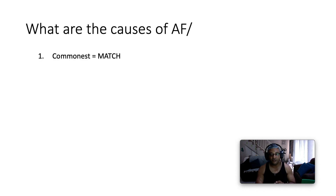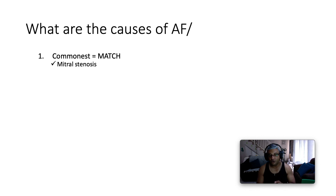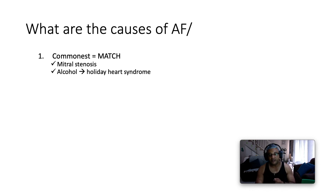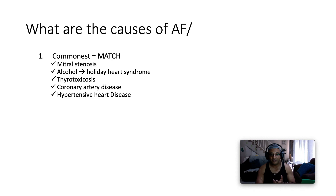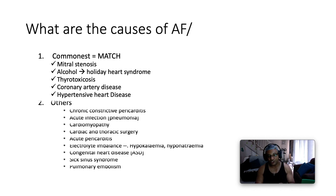What are the causes of atrial fibrillation? To outline the commonest causes, I like to use a mnemonic called MATCH. M stands for mitral stenosis — mitral stenosis imposes a pressure load on the left atrium, which eventually becomes larger, and a large atrium is a nidus for atrial fibrillation. A is for alcohol, in terms of the holiday heart syndrome, which is paroxysmal in nature. T is for thyrotoxicosis. C is for coronary artery disease. H is for hypertensive heart disease. Those are the commonest causes of atrial fibrillation — MATCH.